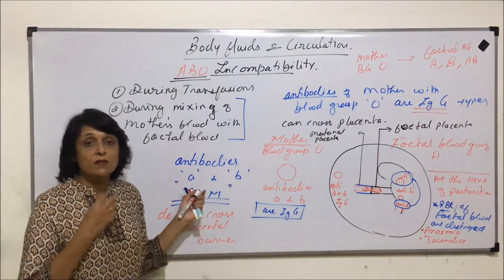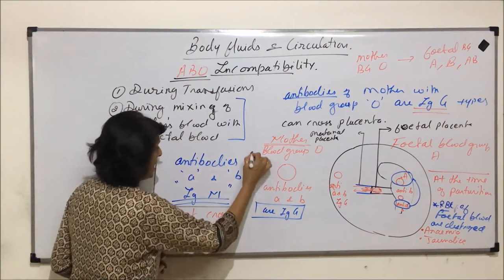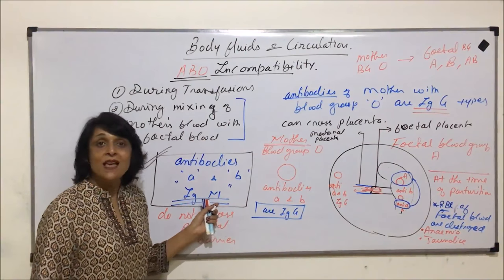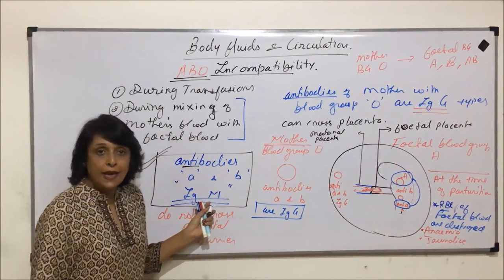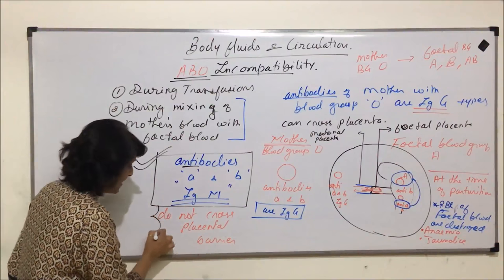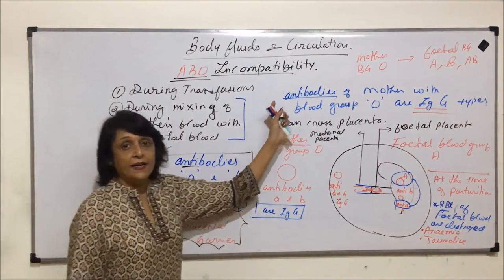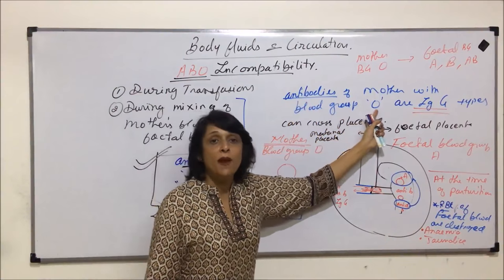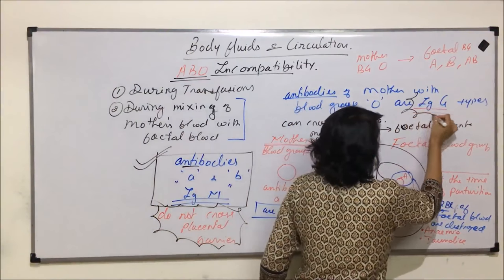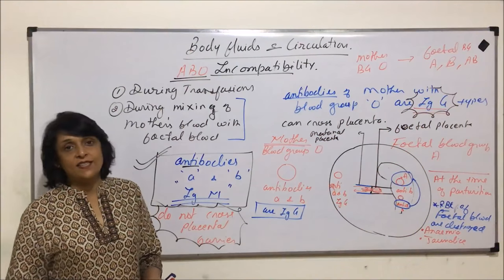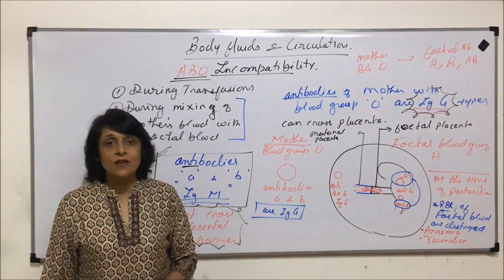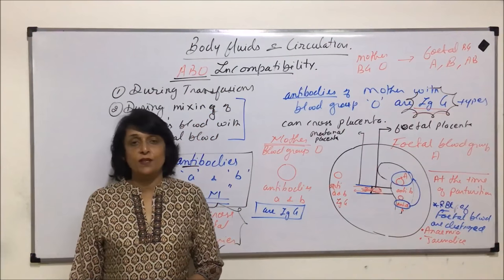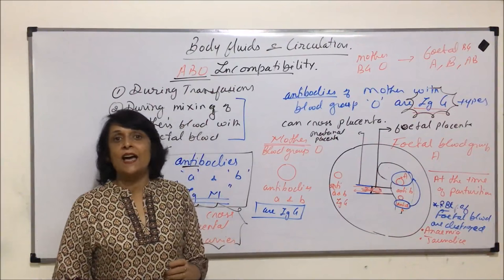To summarize: antibodies A and B are normally IgM type and do not cross the placental barrier. But the same antibodies, if produced by an individual with blood group O, are IgG type and can cross the placental barrier — that is where this situation arises. We have now seen both conditions of ABO incompatibility. In the next segment, we will take up RH factor and RH incompatibility.